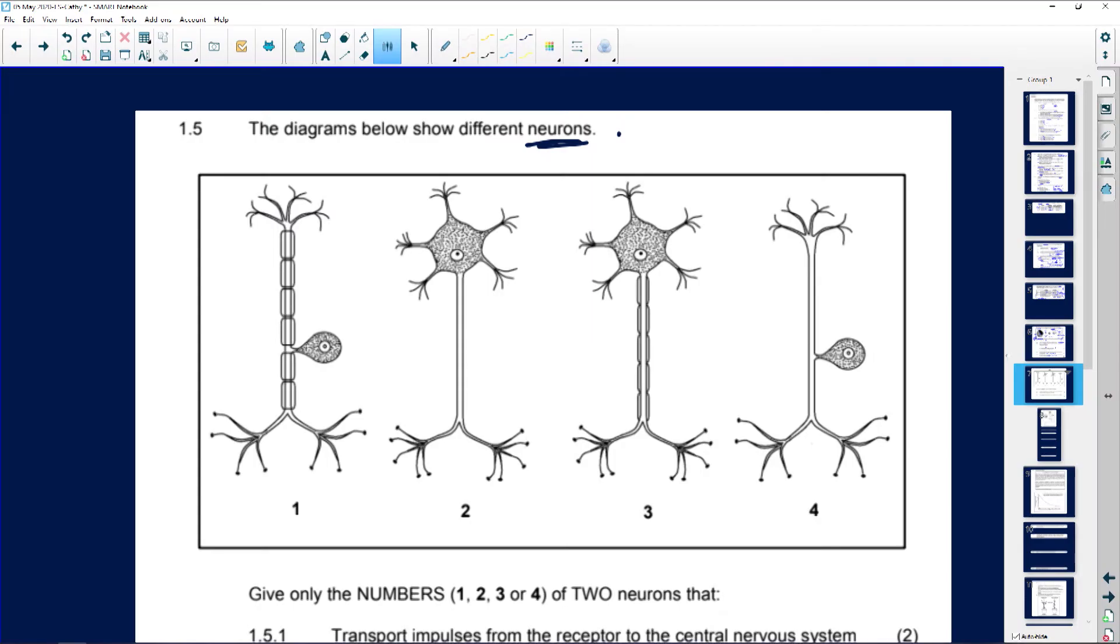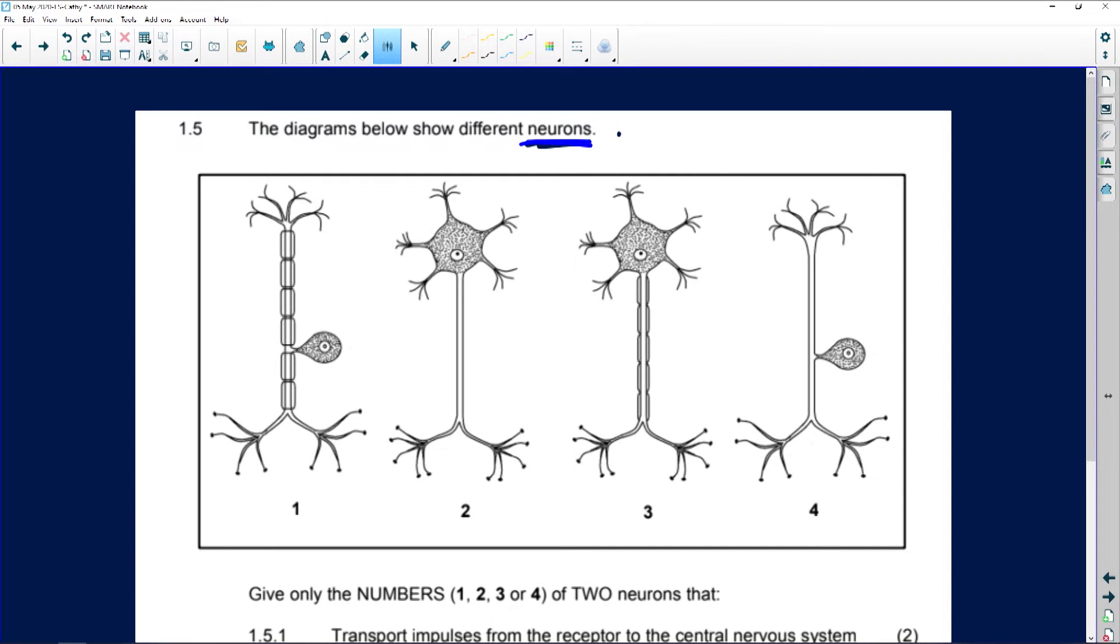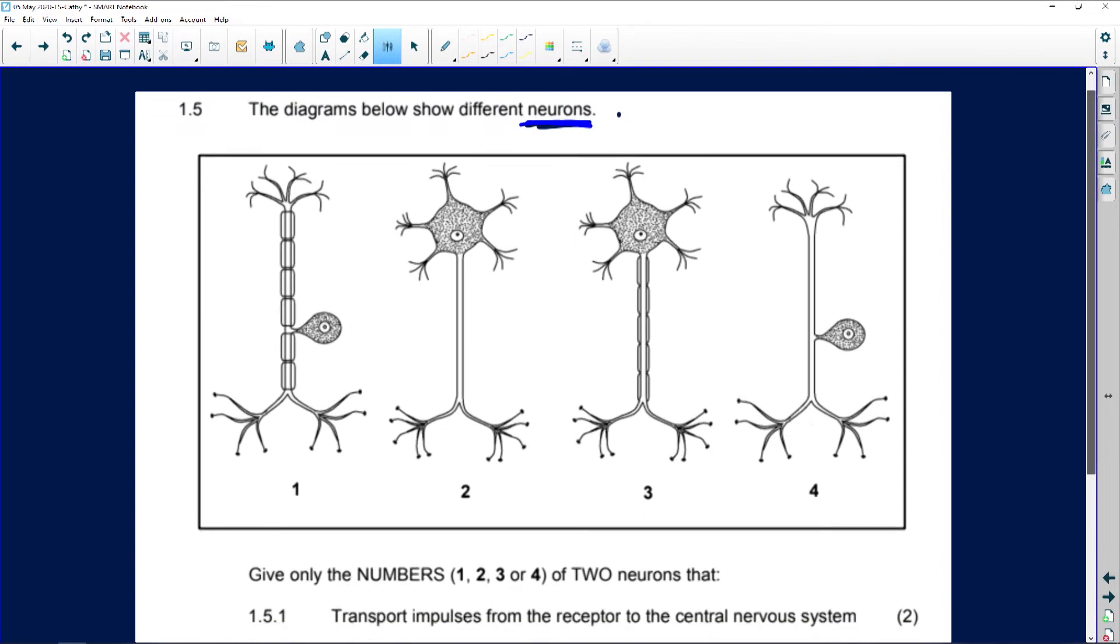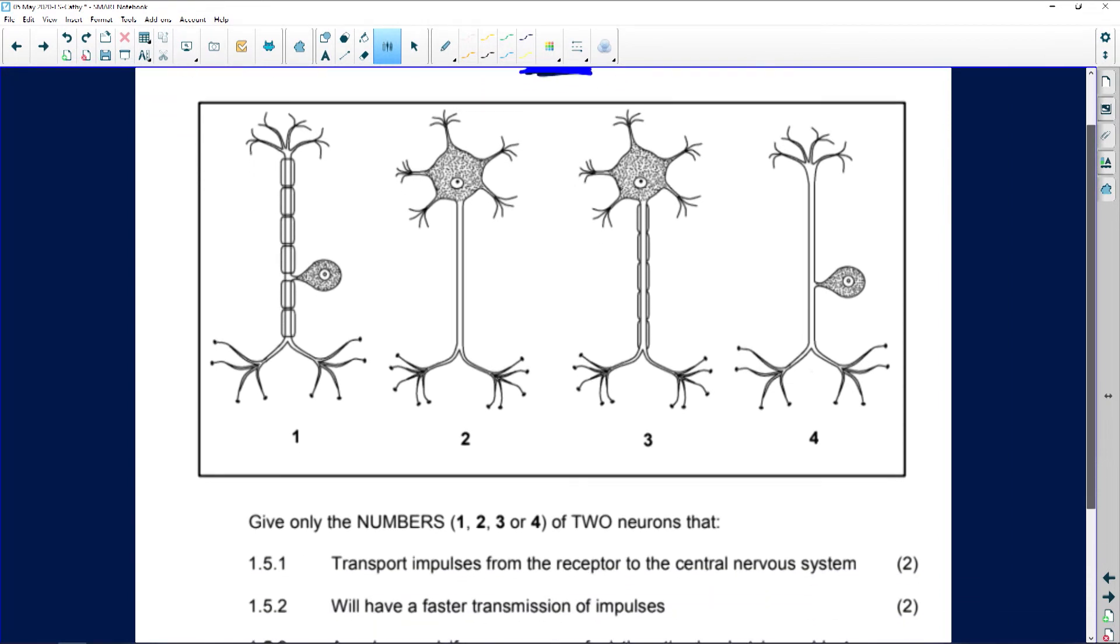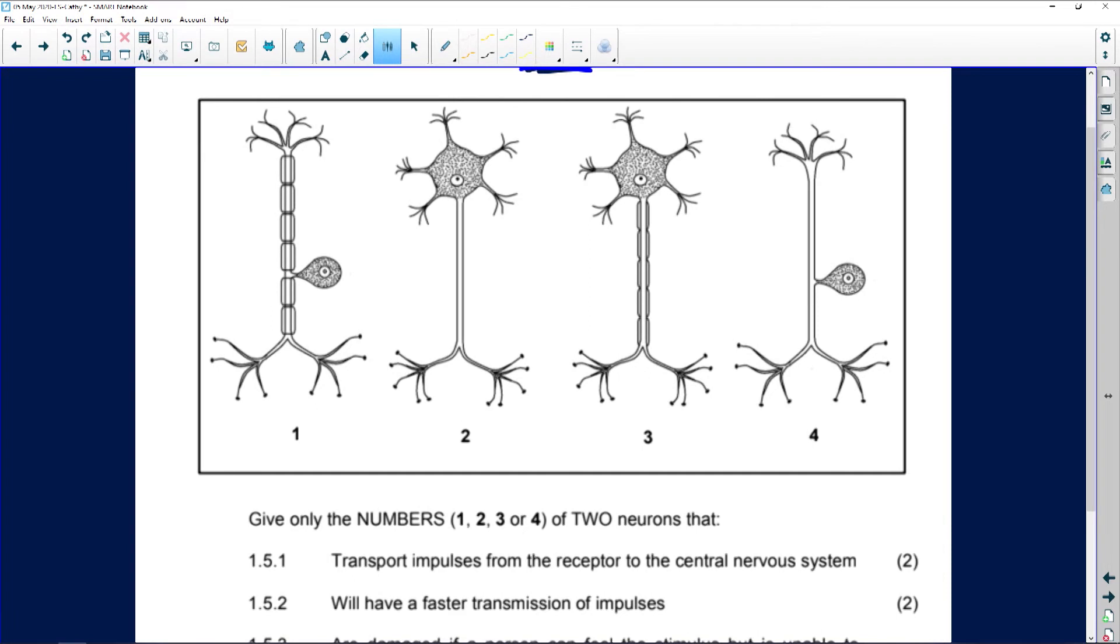All right, here we're looking at the diagram which shows neurons. Now neurons are nerve cells. Lots of neurons make one nerve.